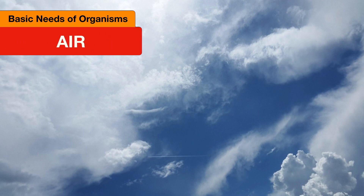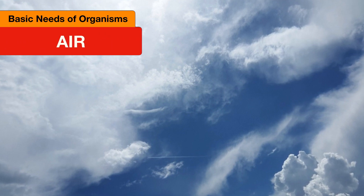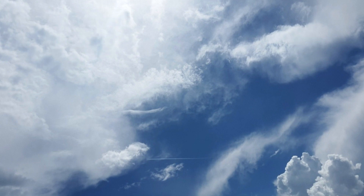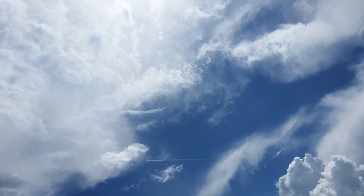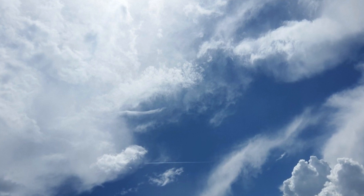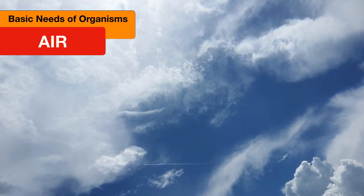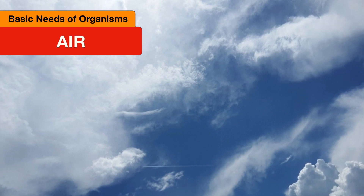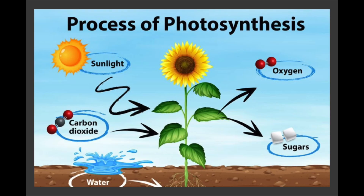Air is the third critical resource for all organisms. Air is not only oxygen, but a mixture of other gases, such as nitrogen, methane, and carbon dioxide. Air is an important part of several essential cycles that also make life on Earth possible. Organisms need oxygen to survive. It helps them grow, reproduce, and turn food into energy.